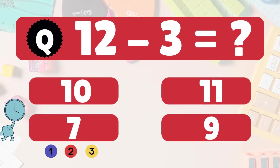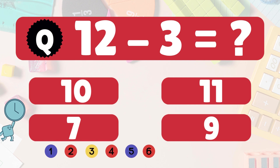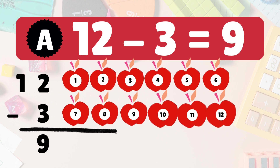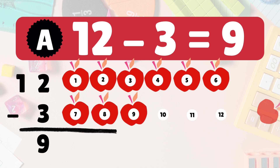Next: 12 minus 3 equals what? 12 minus 3 is 9. Here we have 12 apples. Take 3 away. 9 apples left: 1, 2, 3, 4, 5, 6, 7, 8, 9. So 12 minus 3 is 9. Super job!